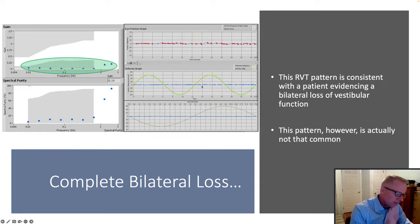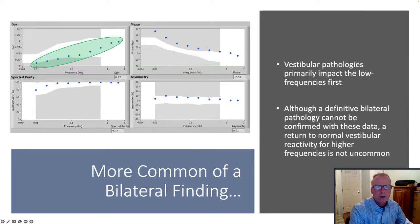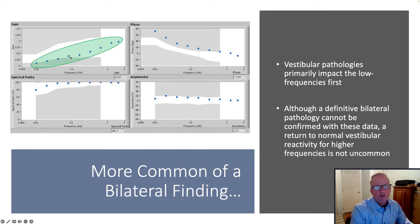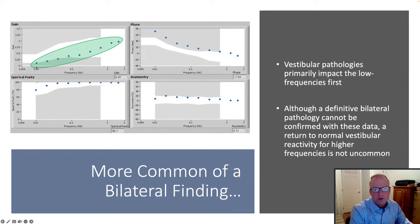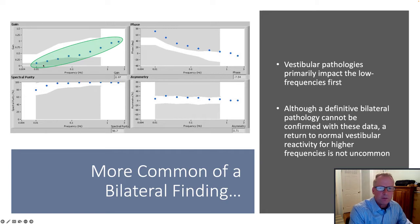But this pattern is actually not very common. The more common pattern you'll see in a bilateral vestibulopathy is a really low reduction in the lower frequencies that often commonly returns to within normal limits. Vestibular pathologies almost always impact lower frequencies first, somewhat opposite to that of presbycusis.